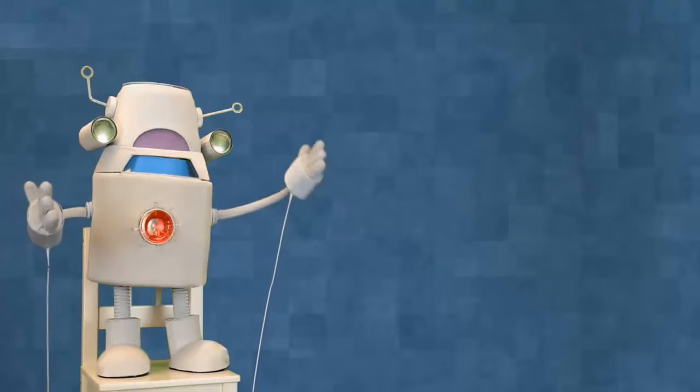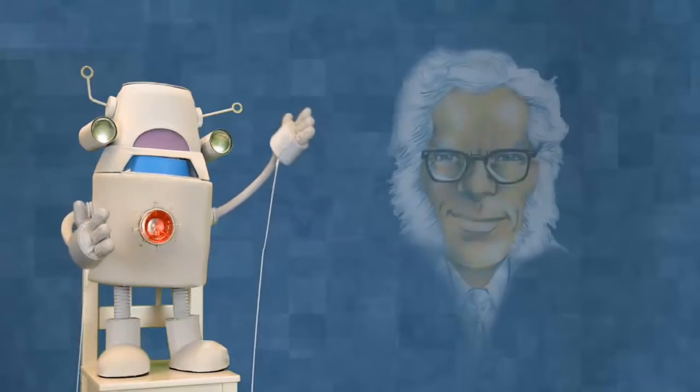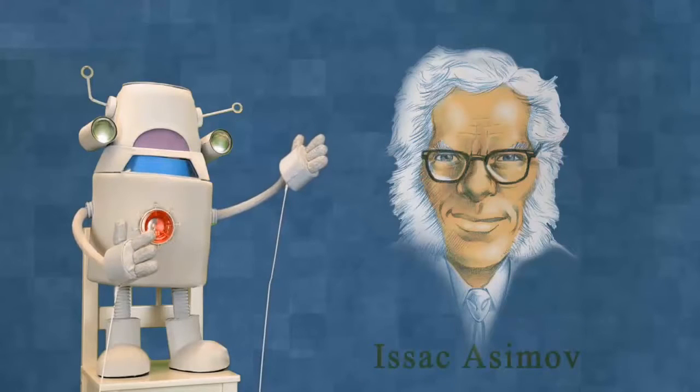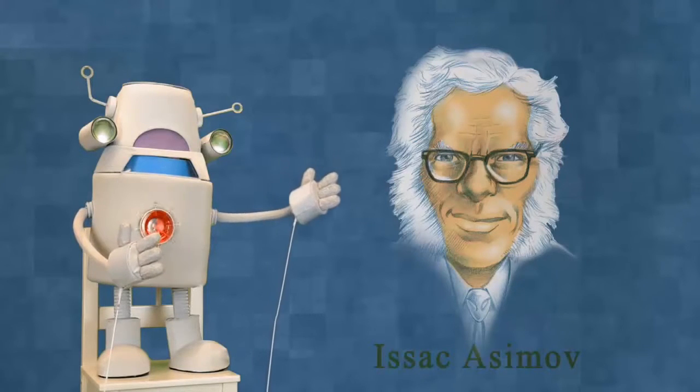Did you know that there is a set of rules for robots? They were created by a writer named Isaac Asimov in 1942.